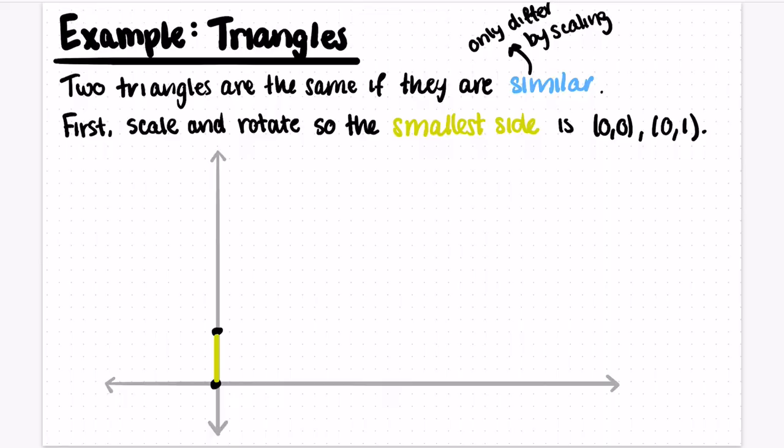What we'll do is we'll first scale and rotate so that the shortest side of the triangle is the line segment (0,0) to (0,1). So we're just going to pick our triangle up, find the shortest side, rotate it so that that side is vertical, and then scale the entire triangle so that the shortest side is (0,0) to (0,1).